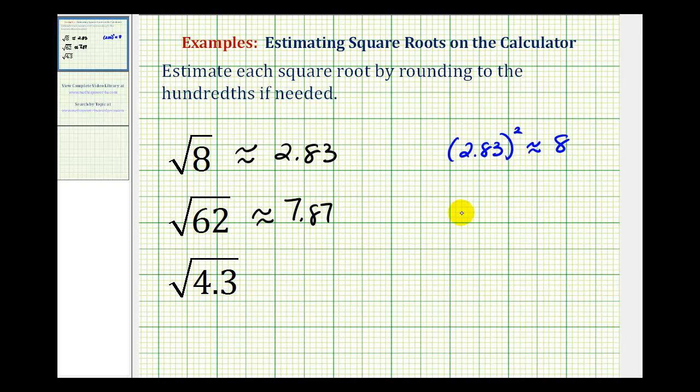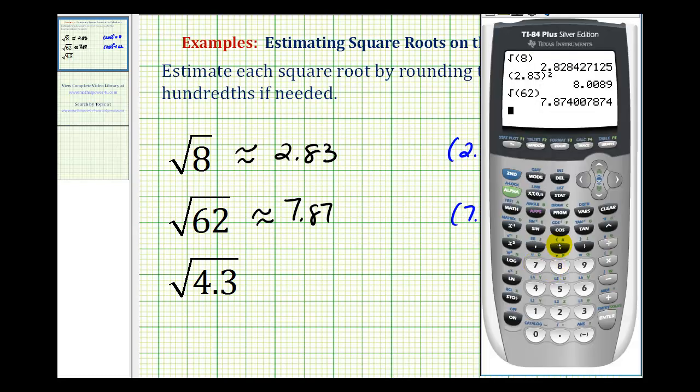Which means if we square 7.87, it should be approximately equal to 62. Let's check this as well. Notice how now we're rounding down. So this value is going to be a little bit less than 62, as we see here.